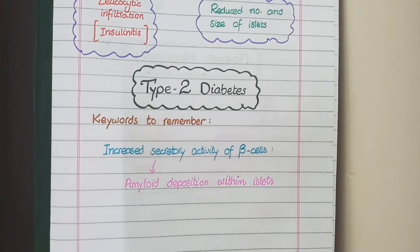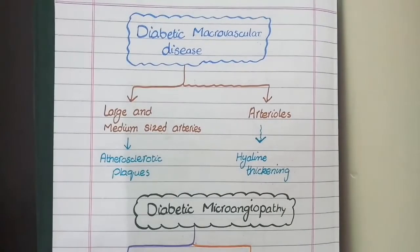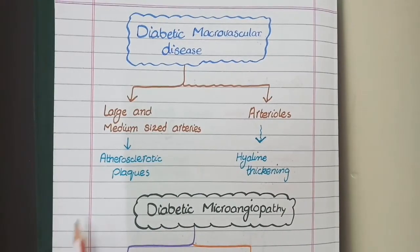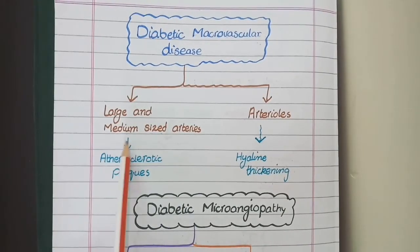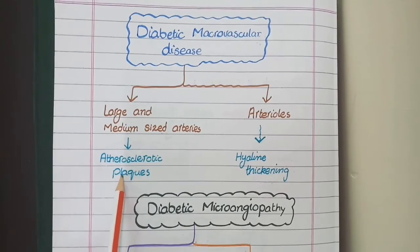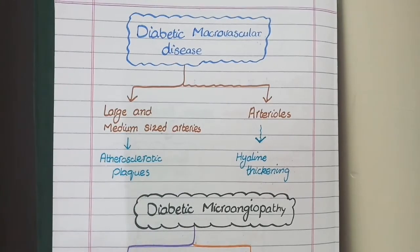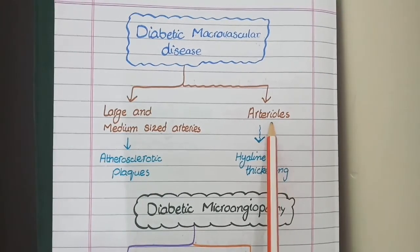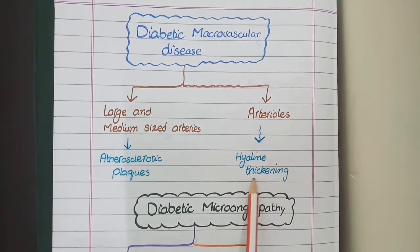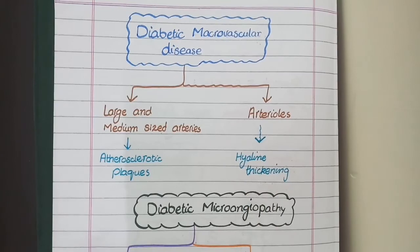Remember that amyloid deposits occur only in Type 2 diabetes and not in Type 1 diabetes. Now for diabetic macrovascular disease: if diabetes affects large and medium-sized arteries, it causes atherosclerosis. If it affects arterioles, it causes hyaline thickening of the vessel wall.